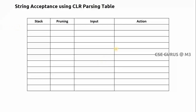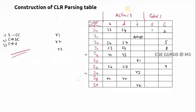We'll take an input string BDD and check whether this input string is accepted by the grammar. Our grammar is: S → CC, C → BC, and C → D. In general, if you see, yes it is accepting. We'll see how it is accepted using the CLR parsing table.